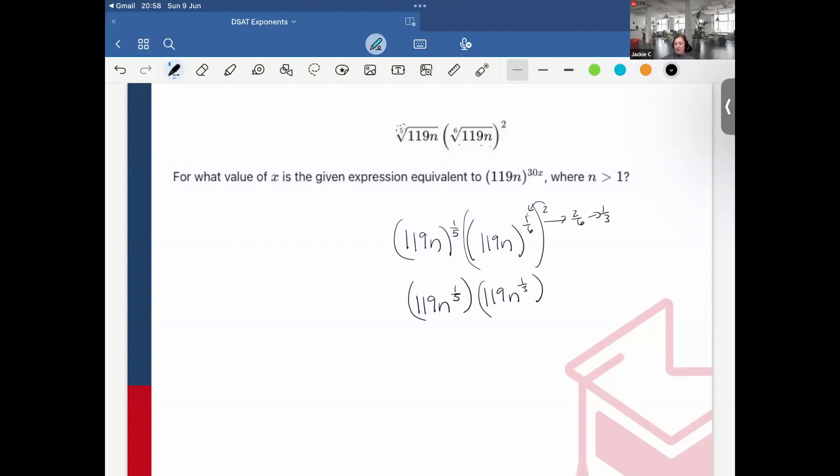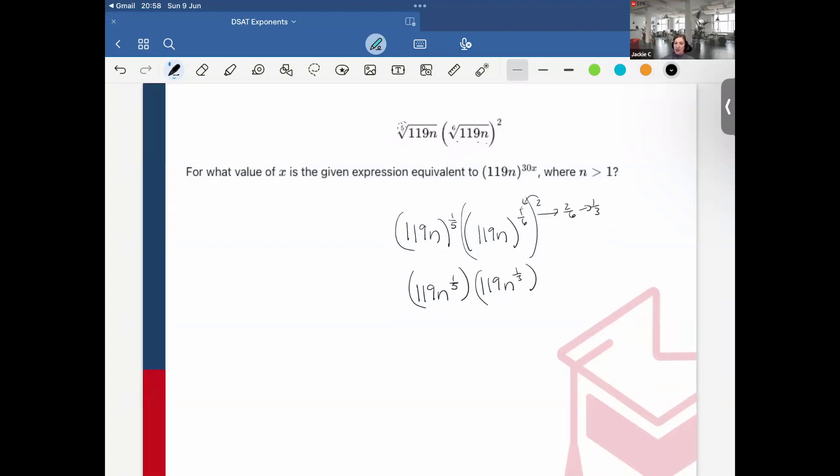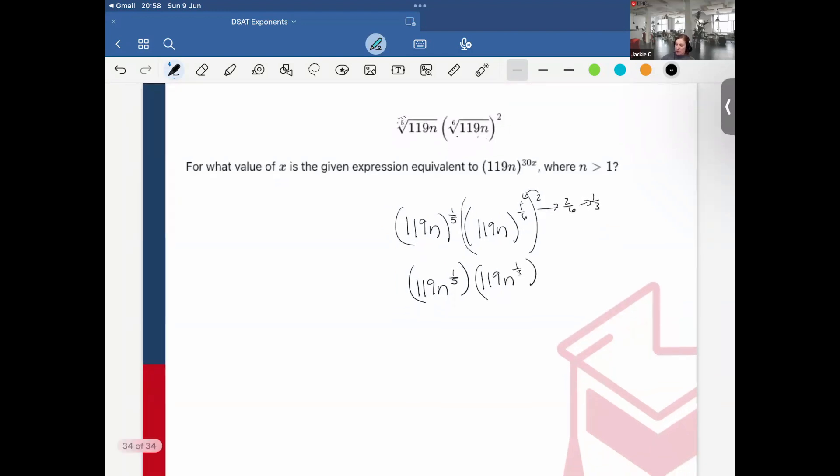And then it says that it's equivalent to 119n to the 30 power. Well, first, note now the bases are the same. So I can just do 119n, one-fifth plus one-third. And then I can set that equal to 119n raised to the 30x.